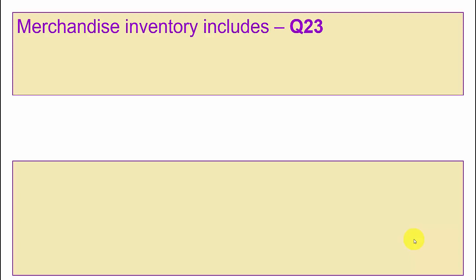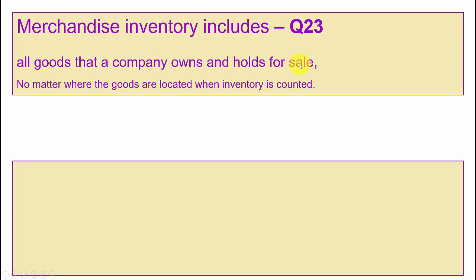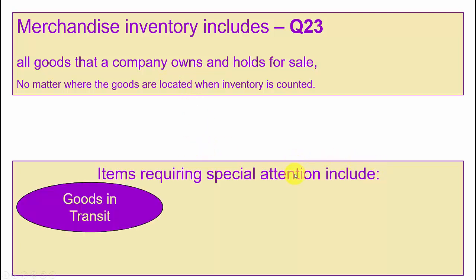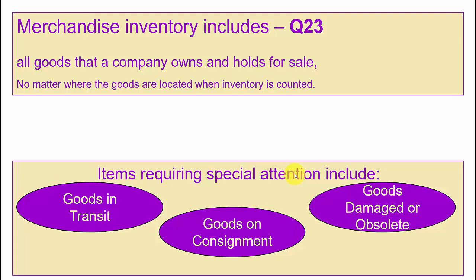Let's switch gears to another topic: what should we include in inventory? This deals with question 23. We should include all goods that a company owns and holds for sale, no matter where the goods are located when inventory is counted. Special attention is required for goods in transit, goods on consignment, and goods that are damaged or obsolete.